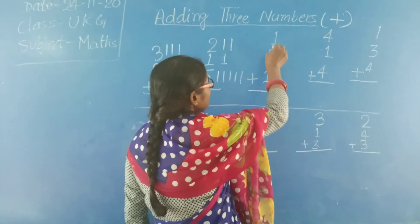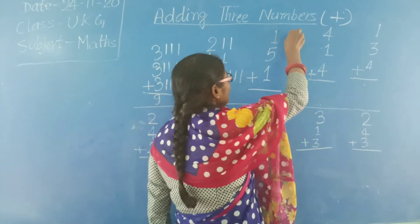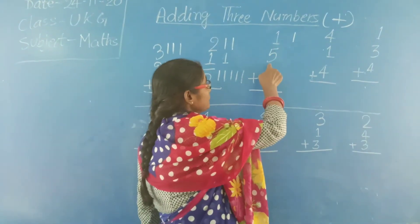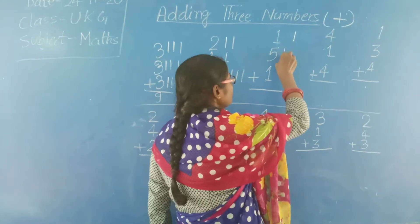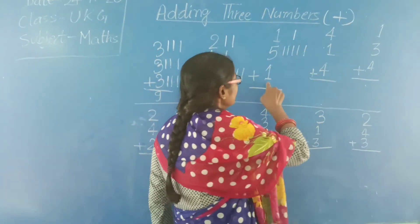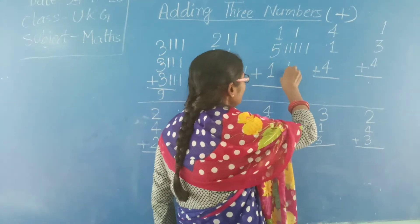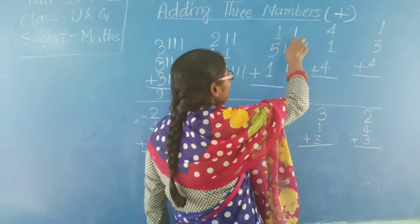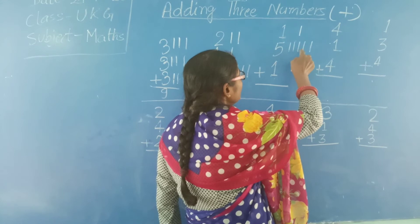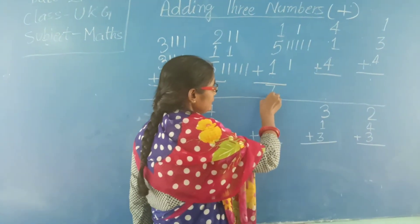Next: 1, 5, 1. The first number is 1, so we draw 1 line. The second number is 5, so we draw 5 lines: 1, 2, 3, 4, 5. The third number is 1, so we draw 1 line. Now count: 1, 2, 3, 4, 5, 6, 7. The answer is 7.